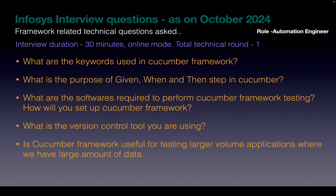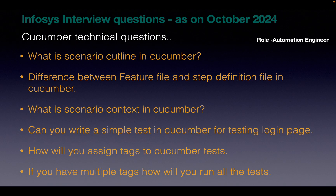The next question: what is the version control tool you are using? You can explain about Git or any other version tools you are using. The next question: is Cucumber framework useful for testing larger volume applications? Yes, we can definitely test large volume applications using Cucumber framework. The next question: what is the use of scenario outline in Cucumber? Suppose there is a scenario and we have to test it with different combinations of input values — we can go for scenario outline. The same scenario can be tested multiple times with different combinations of values.